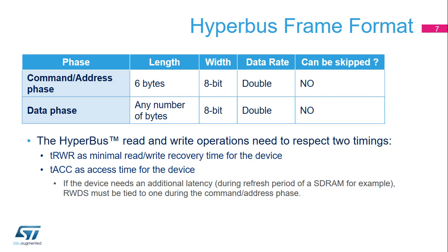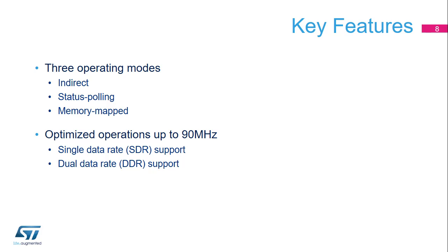If the device needs an additional latency, RWDS must be tied to 1 during the command address phase. The Octo SPI integrated inside STM32 products offers three operating modes, which will be explained later in this presentation.